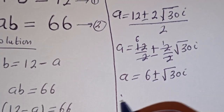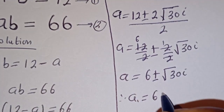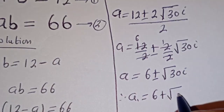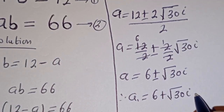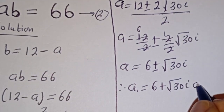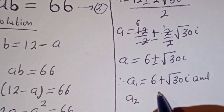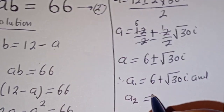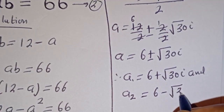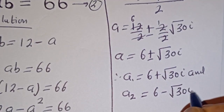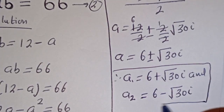Therefore, A1 is equal to 6 plus square root of 30 i, and A2 is equal to 6 minus square root of 30 i. These are the values of A.